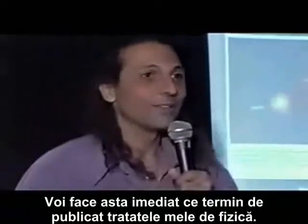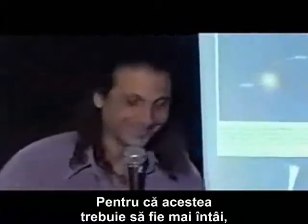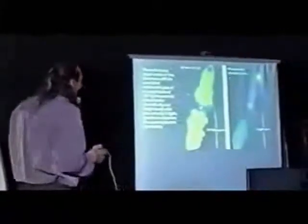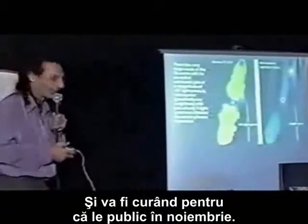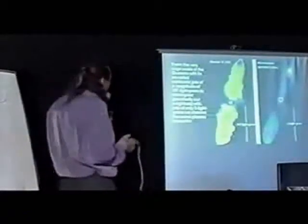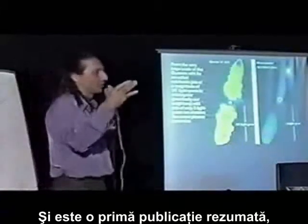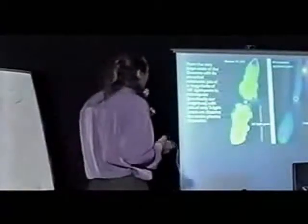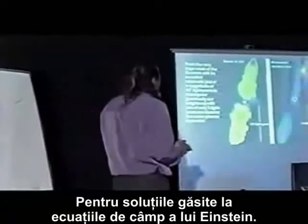I will. I've been asked to do that for a long time. I will do it as soon as I'm finished publishing the physics papers, because that has to be there first so that I'm not discredited. You've got to be careful in this world, although I'm already way out on the edge. But I'm trying to minimize the damage. That's soon because I'm publishing in November — in Temple University Press, a peer-reviewed journal. It's just the first publishing, which is an overview. The overview will have sections published in other journals, probably FISREV and math journals for the solutions we found to Einstein field equations.